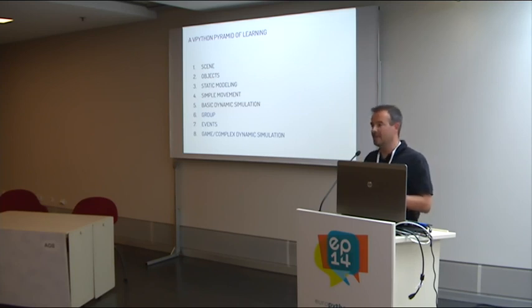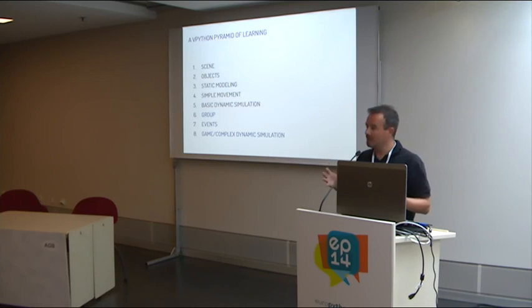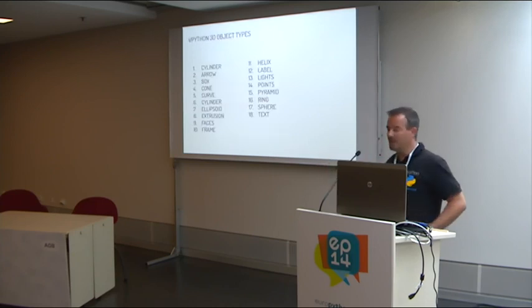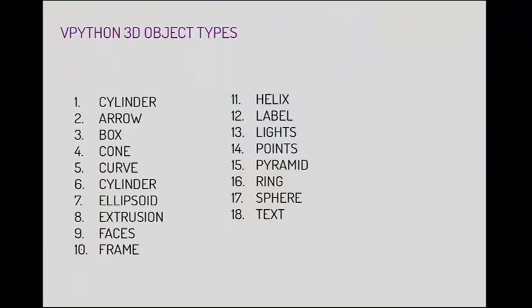My dream is to construct games with vPython together with my students. There are 18 types of primary objects we can use — simple and more complex ones: sphere, text, pyramid, points, lights, label, and so on.